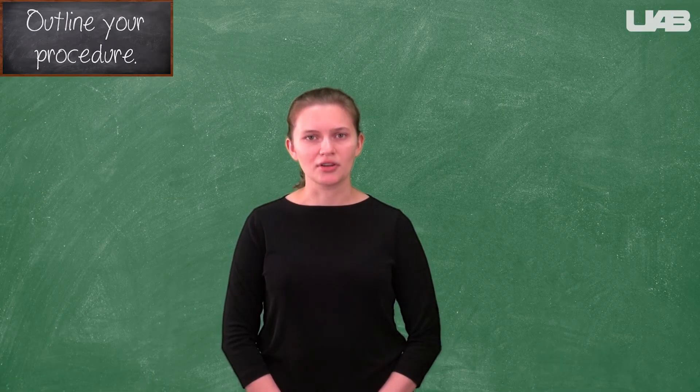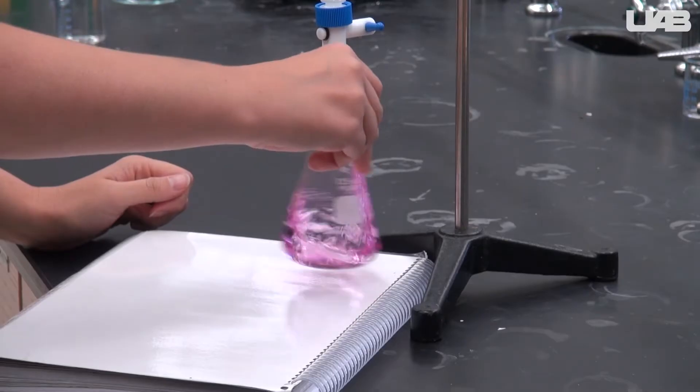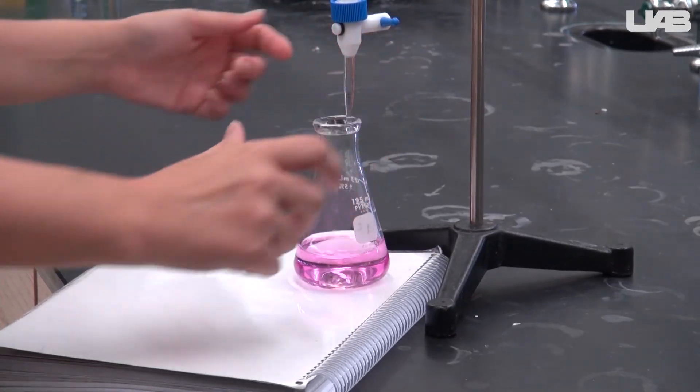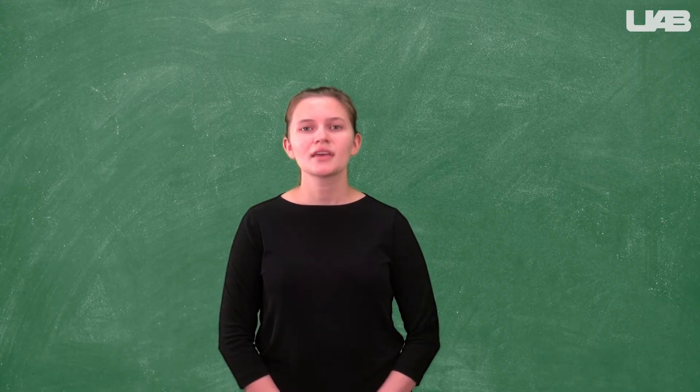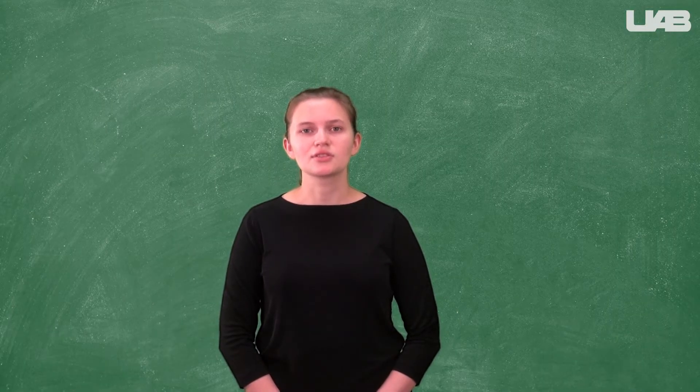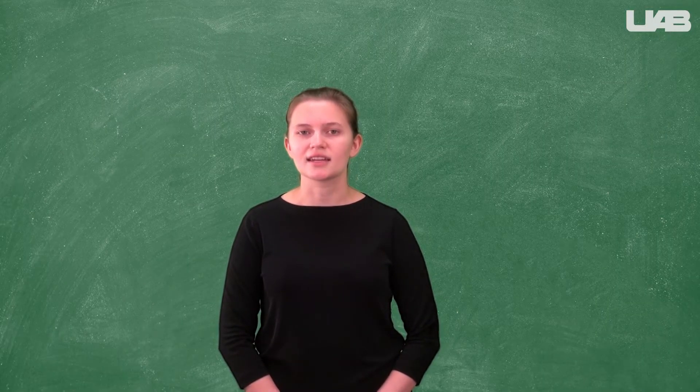Record the final volume in the burette. If you let it go too far, it will turn a very bright pink. You should redo the titration if it looks like this at the end. You will repeat this procedure until you and your TA decide that the data is precise.